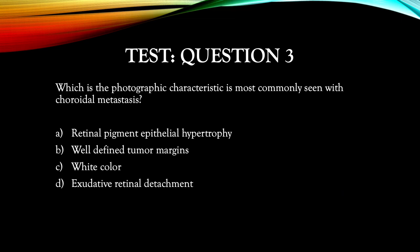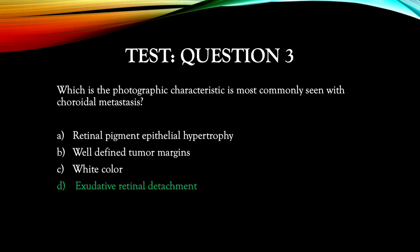Choroidal metastasis is the most common intraocular cancer. Relatively fast-growing, these tumors quickly infiltrate their surrounding uvea and consume the overlying retinal pigment epithelium. They are characterized by their rapidly created, poorly insulated, leaking tumor blood vessels. Which is the photographic characteristic most commonly seen with choroidal metastasis? The answer is D, exudative retinal detachment. Metastatic cancer to the choroid, usually from the breast or lung, will exhibit secondary exudative retinal detachments due to their poorly formed aneurysmal leaking tumor blood vessels.